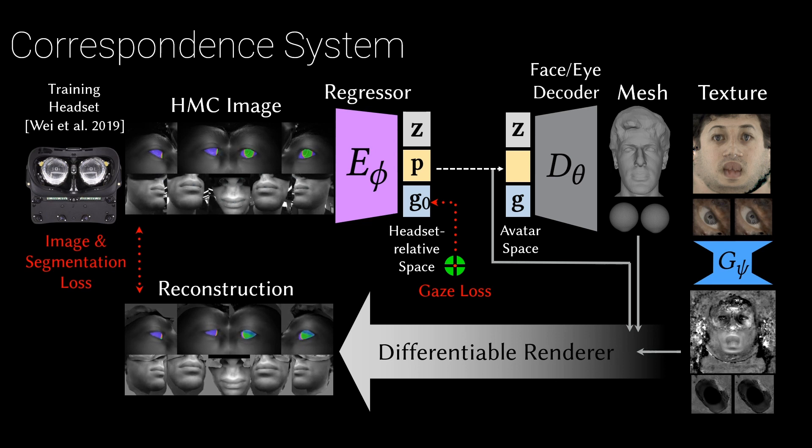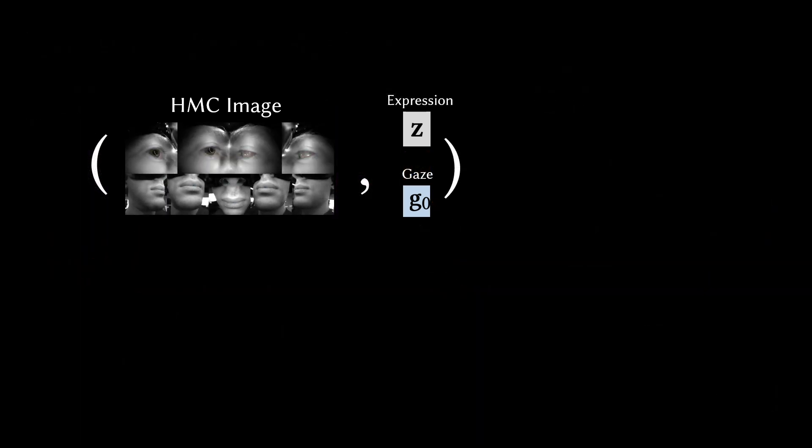Our eyeball model lets us apply novel constraints to match 2D eye segmentations to further improve the driving precision. This process gives us pairs of headset images and inputs for an avatar that matches the face seen in those headset images.